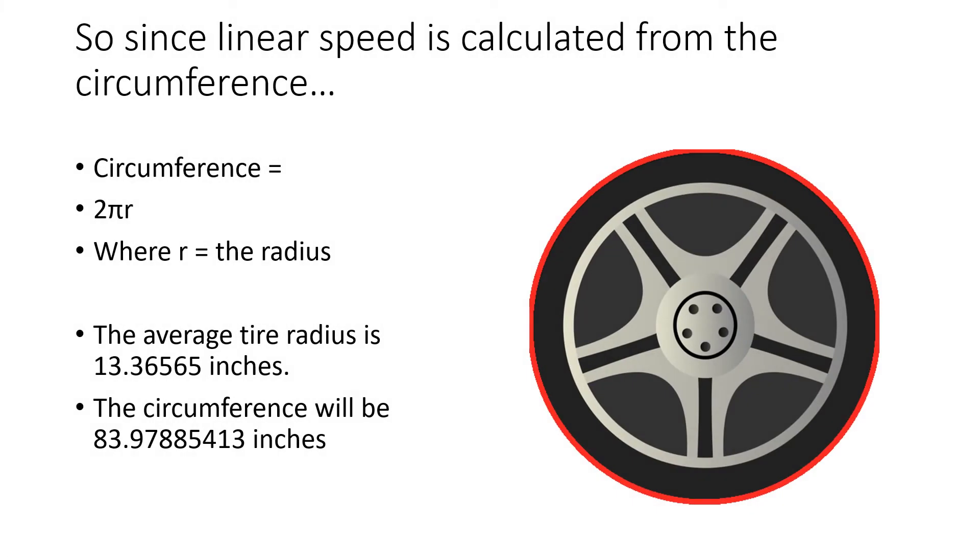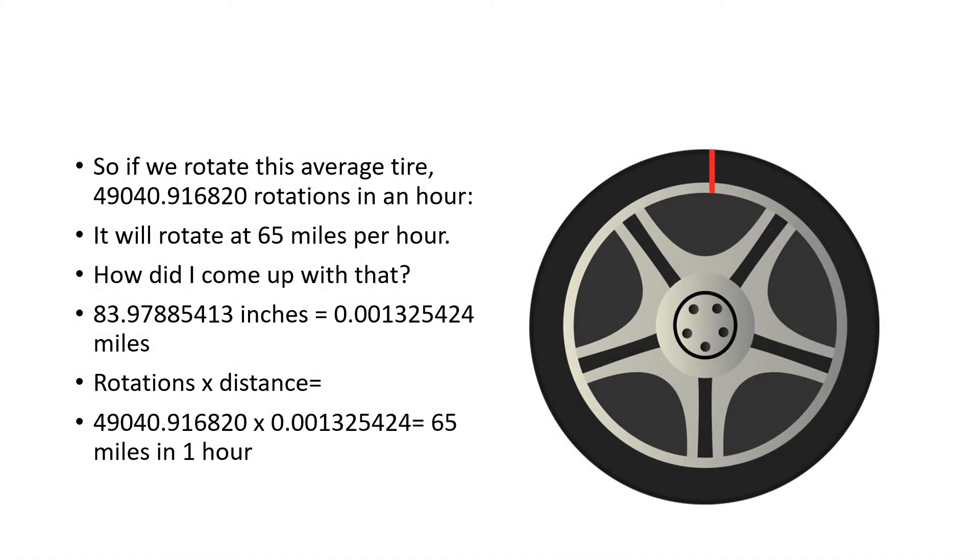So since linear speed is calculated from the circumference, circumference equals 2 pi r, where r equals the radius. The average tire radius is 13.36565 inches. The circumference will be 83.97885413 inches. So if we rotate this average tire 49,040.916820 rotations in an hour, it will rotate at 65 miles per hour.